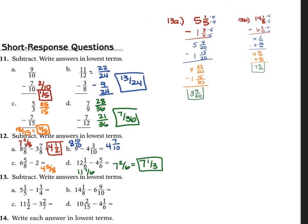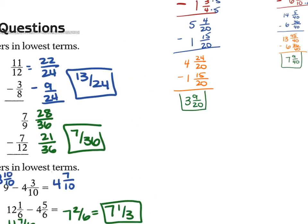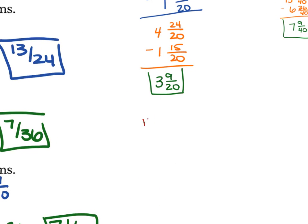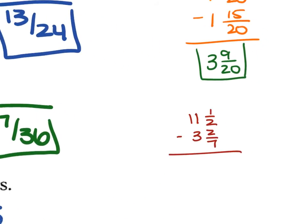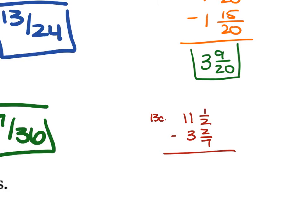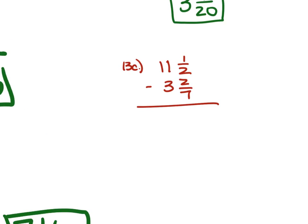For 13C, 11 and 1 half minus 3 and 2 sevenths: LCD is 14, converting to 11 and 7 over 14 minus 3 and 4 over 14. Since 7 is greater than 4, we can subtract directly: 11 minus 3 is 8, and 7 minus 4 is 3 over 14 — answer is 8 and 3 over 14.